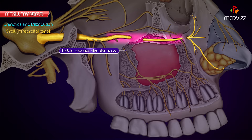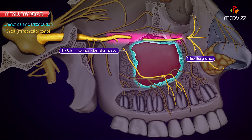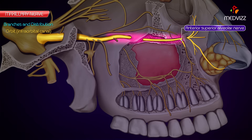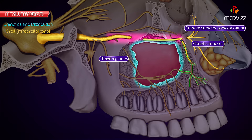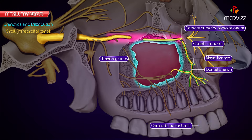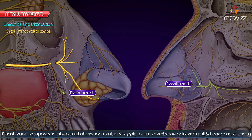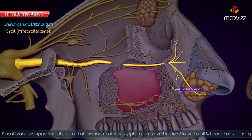In the orbit or infraorbital canal, the middle superior alveolar nerve passes downwards and forwards along the lateral wall of the maxillary sinus, joins the superior dental plexus, and supplies the premolar teeth. The anterior superior alveolar nerve runs in the anterior wall of the maxillary sinus through a bony canal called the canalis sinuosus and divides into dental and nasal branches. The dental branches join the superior dental plexus and supply the canine and incisor teeth. The nasal branches appear in the lateral wall of the inferior meatus and supply the mucous membrane of the lateral wall and floor of the nasal cavity.